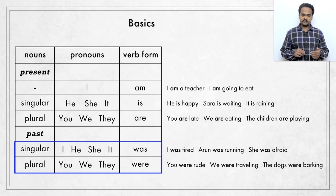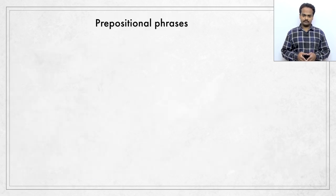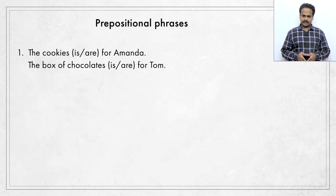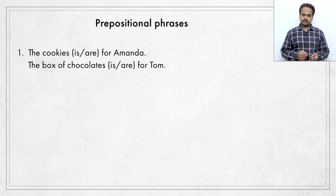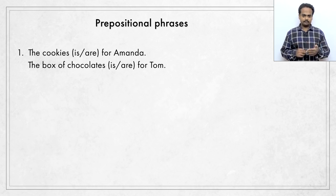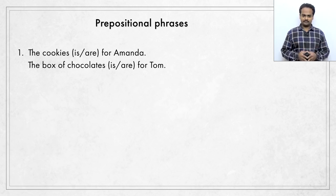So now, let's discuss some more advanced topics. Let's start with prepositional phrases. Here's an example. There are two places where you have to choose between is and are. The cookies is for Amanda, or the cookies are for Amanda. And the box of chocolates is for Tom, or are for Tom. What do you think?